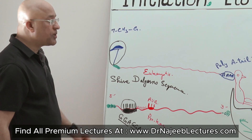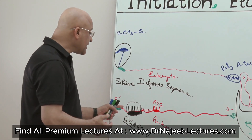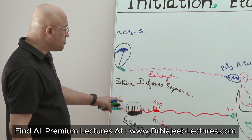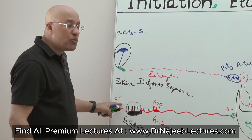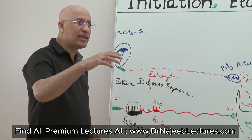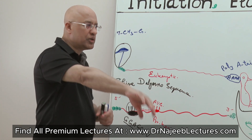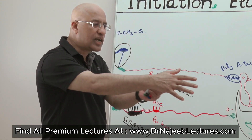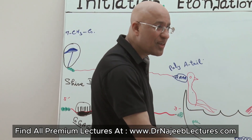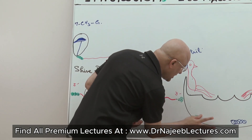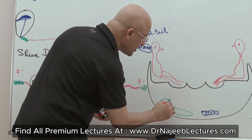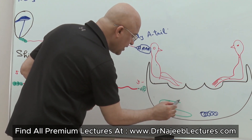The special function of the Shine-Dalgarno sequence is that it acts as a hook or sticking point from where the messenger RNA will bind with the 30S subunit. When prokaryotic messenger RNA is made, it comes into the cytosol, and in the cytosol the Shine-Dalgarno sequence looks for a special point where it will bind.